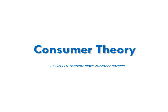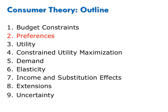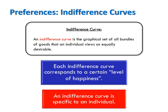This video is part of consumer theory. I will discuss preferences by introducing indifference curves. An indifference curve is the graphical set of all bundles of goods that an individual views as equally desirable. Every bundle on an indifference curve gives a consumer the same amount of pleasure. Each indifference curve corresponds to a certain level of pleasure or happiness. Because preferences are very specific to the individual, indifference curves are specific to an individual as well.